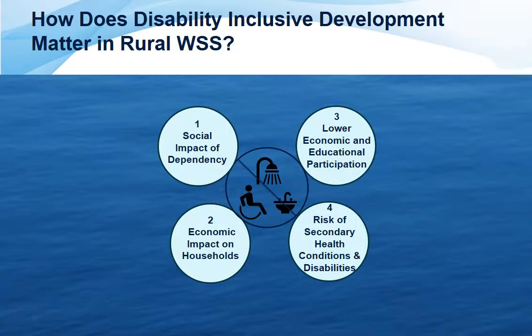How does disability inclusive development matter in rural context? The guidance note lists four impacts or consequences produced by lack of access to water resources among persons with disabilities. These include the social impact of dependency — when persons with disabilities are dependent on others to access safe water or sanitation, they are at greater risk of sexual and financial exploitation, for example.